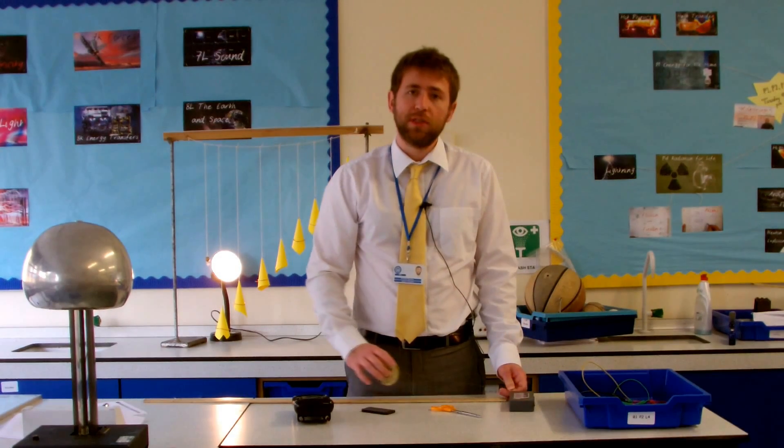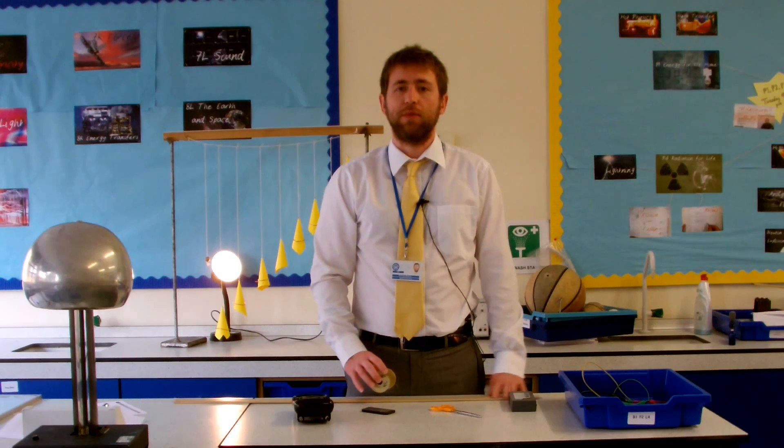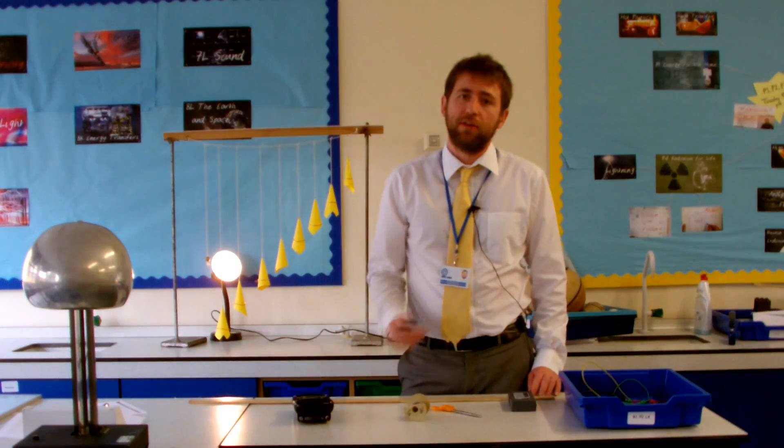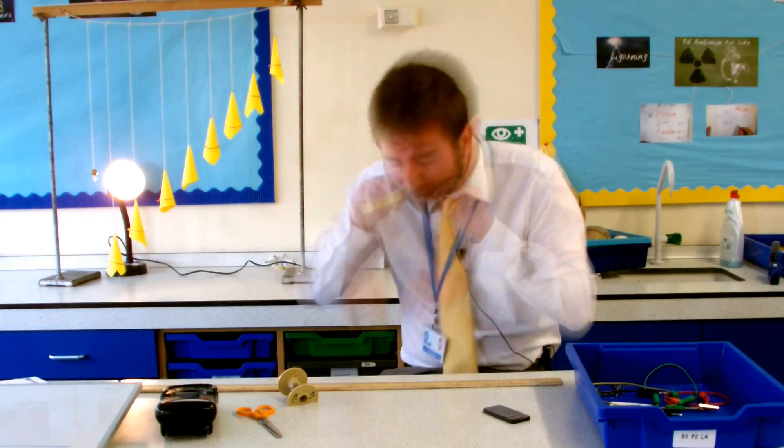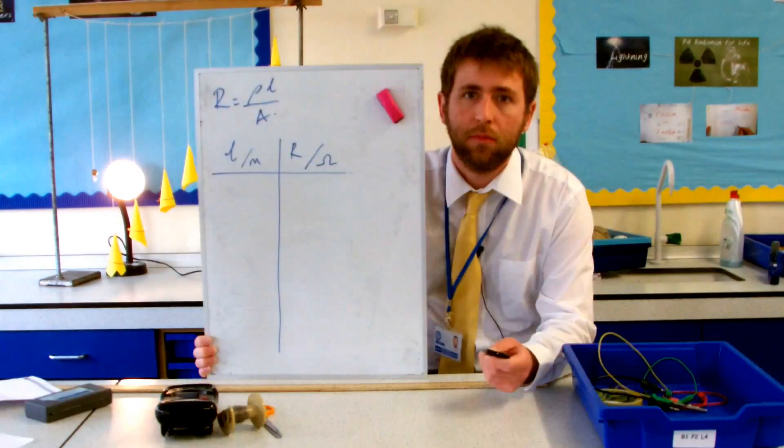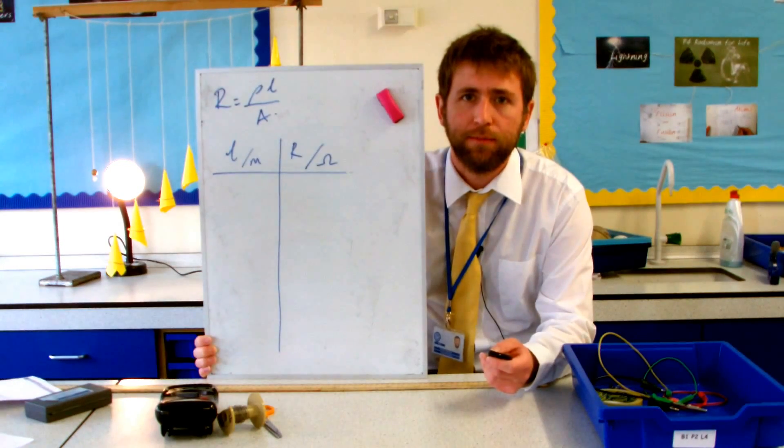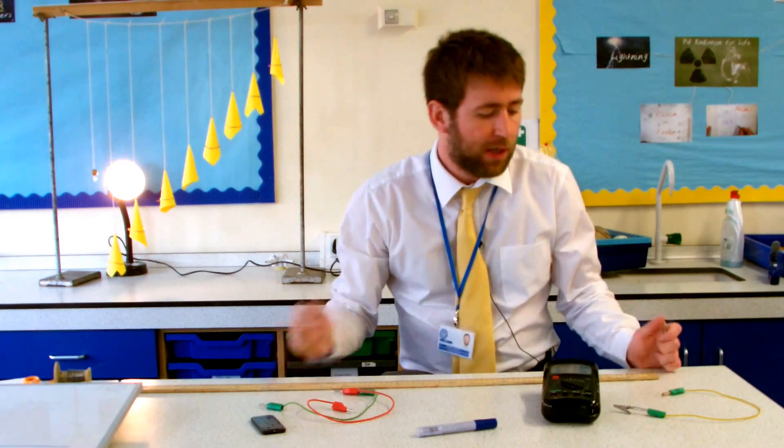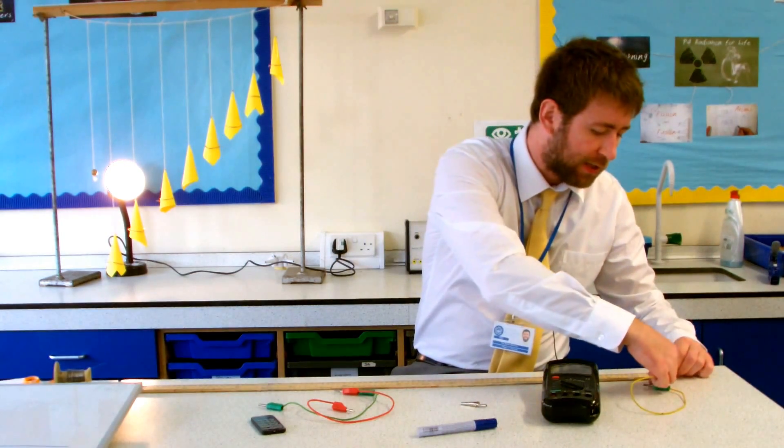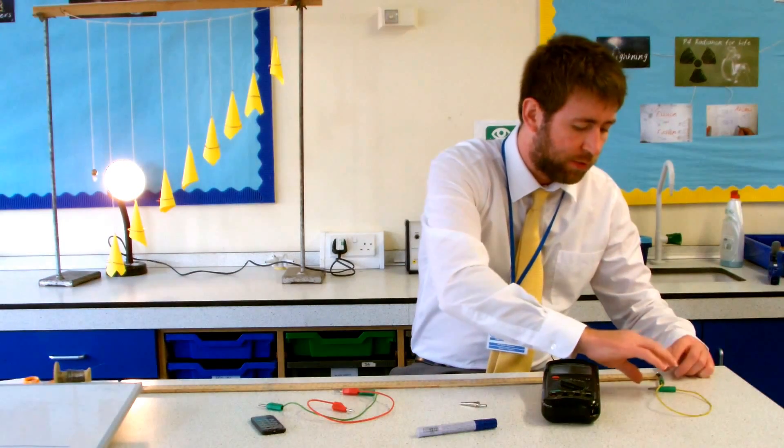We're just going to stretch a one meter length of that wire onto our meter rule so that we can actually vary the length. Results table ready. My wire's stretched out over the full meter now. I'm going to attach one of my leads with a crocodile clip right at the end, the zero end if you like, of the ruler, and I'm just going to leave that one there the whole time.